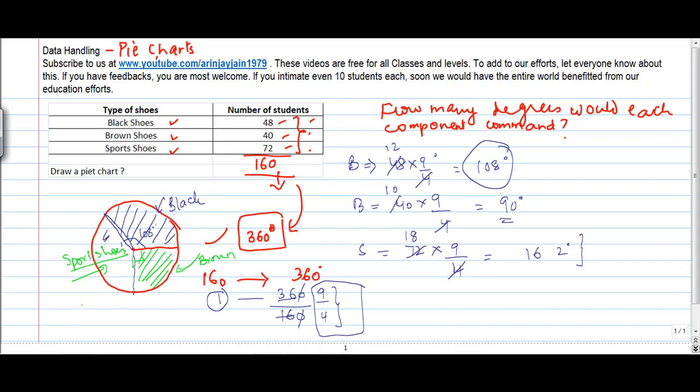So basically what you have done is you have represented this data in a pie chart. Now let me just do the coloring of this. Black shoes. I actually don't have a brown color. Let me use something like this. Brown shoes and the balance is the sport shoes. Let's say the sport shoes is comprised in the yellow part.